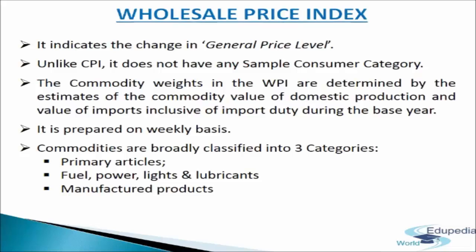Primary Articles includes those goods which are obtained by exploiting natural resources like wheat, rice, pulses, fruits, vegetables, minerals etc. The number of items in this category is 98 and the weight is 22.02%.